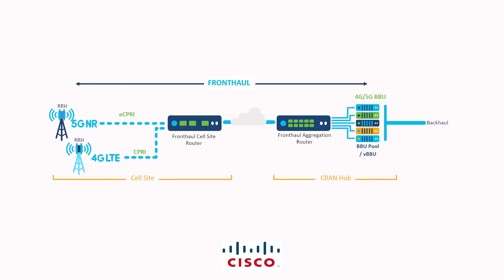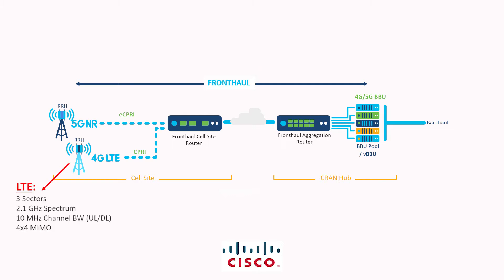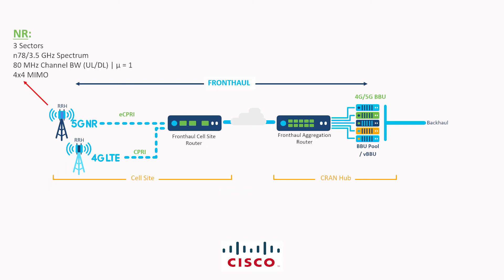Let us consider a converged fronthaul deployment at a macro cell site. There is a need to carry both 4G and 5G resources using the same fronthaul routers. This is a standard three-sector deployment with each sector serviced by both LTE and NR radios. The configuration of the homogeneous LTE radios for the 2.1 GHz spectrum is 4x4 MIMO using 10 MHz of channel bandwidth for both uplink and downlink.